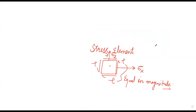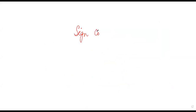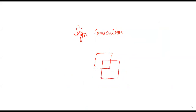Returning to my whiteboard — I was talking about this stress condition where you have stresses acting along two directions. Let me very quickly cover what we call sign conventions. If you take a stress element, the area is now a vector for us.